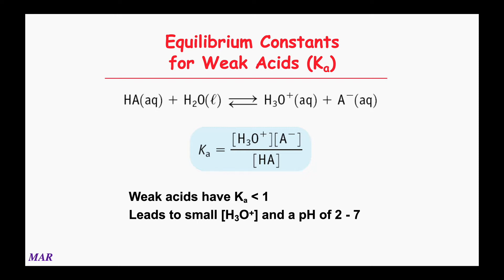pH for weak acids usually runs in the range two to seven. They have to be acidic, so seven would be neutral — it's probably going to be a little less than seven. However, because you don't have a lot of hydronium, pH won't get any lower than about two — and that's a rough guideline with exceptions.